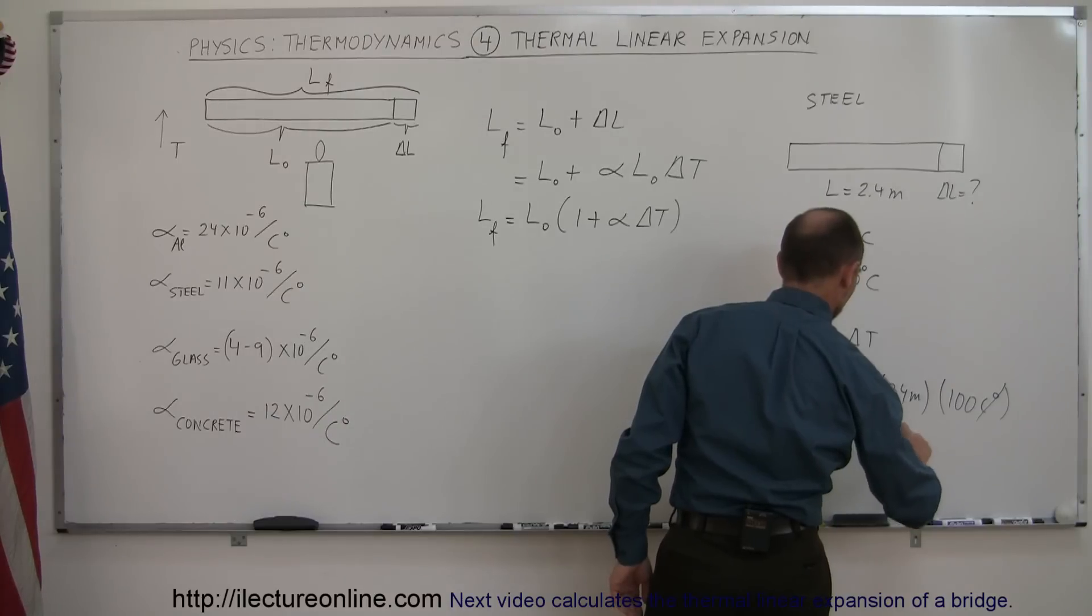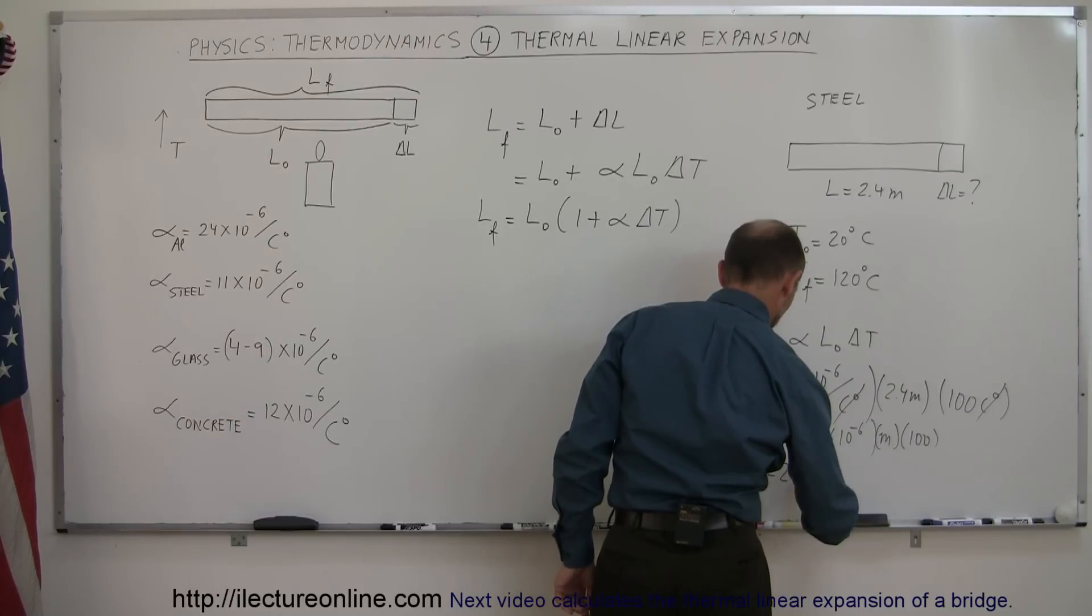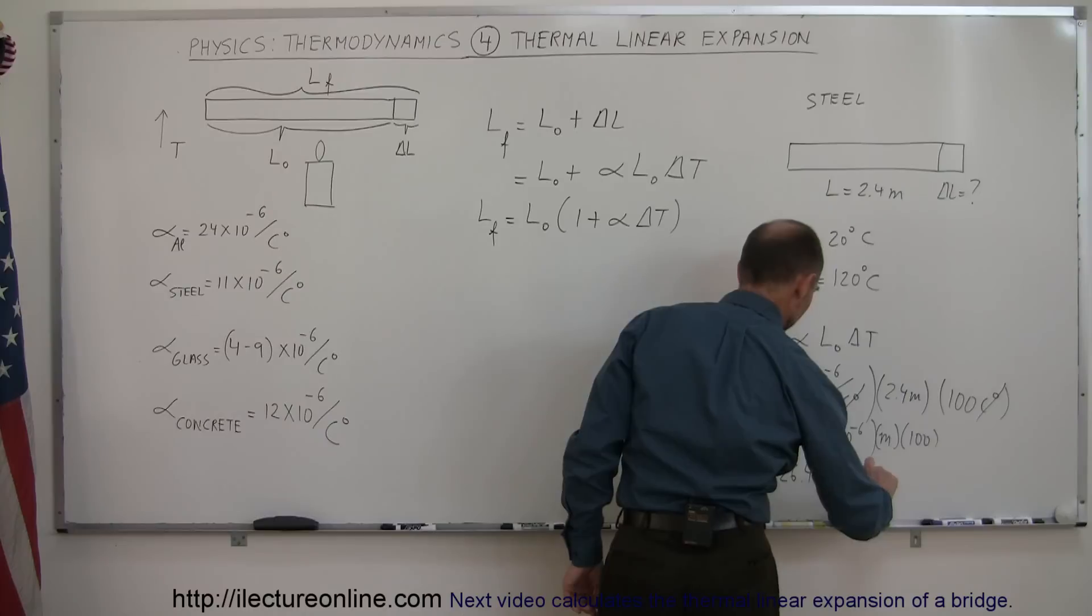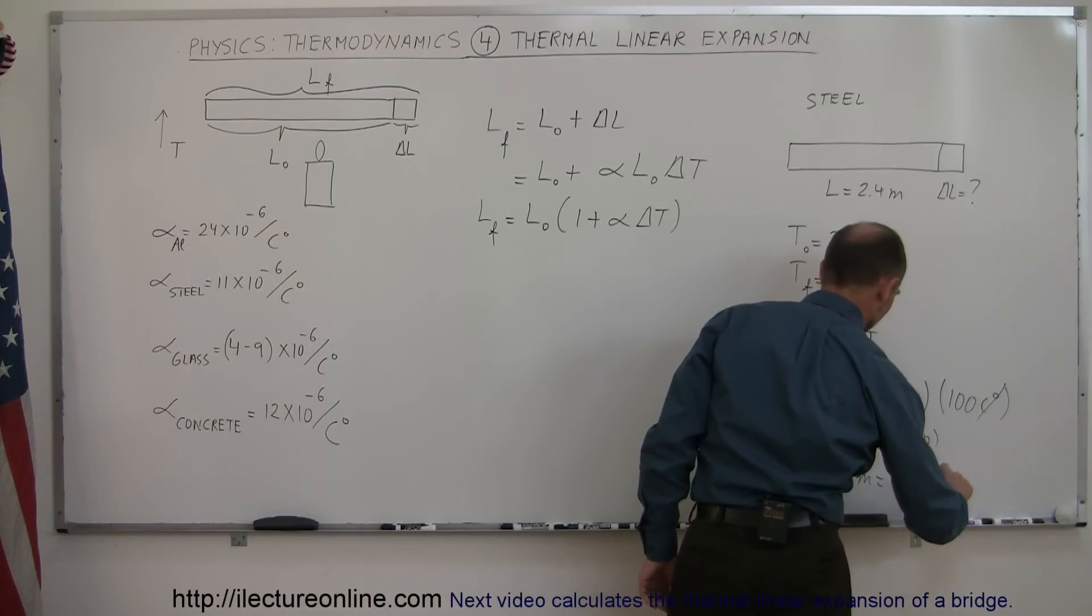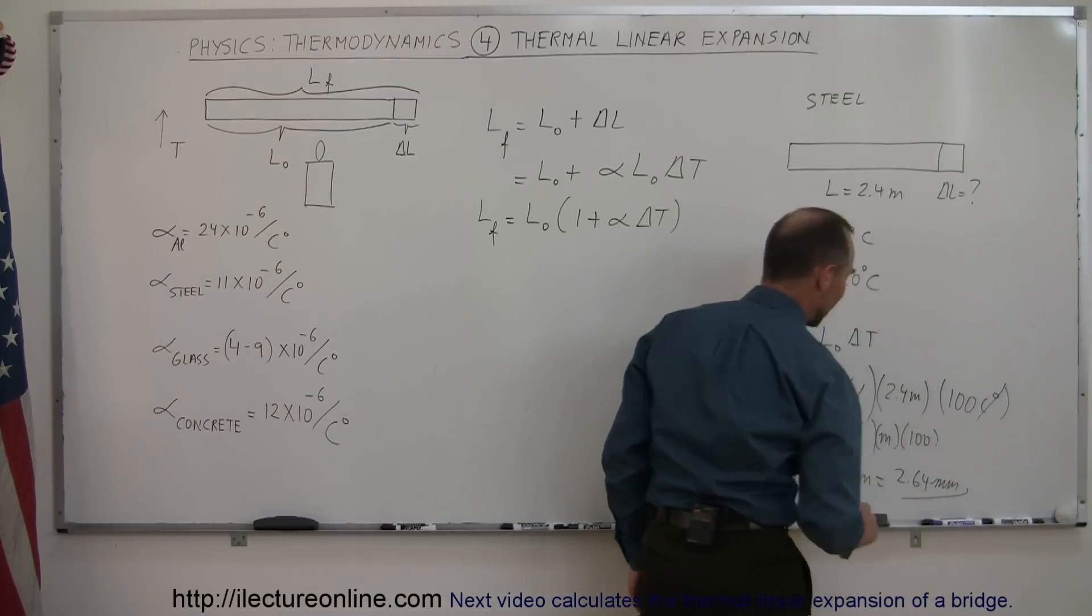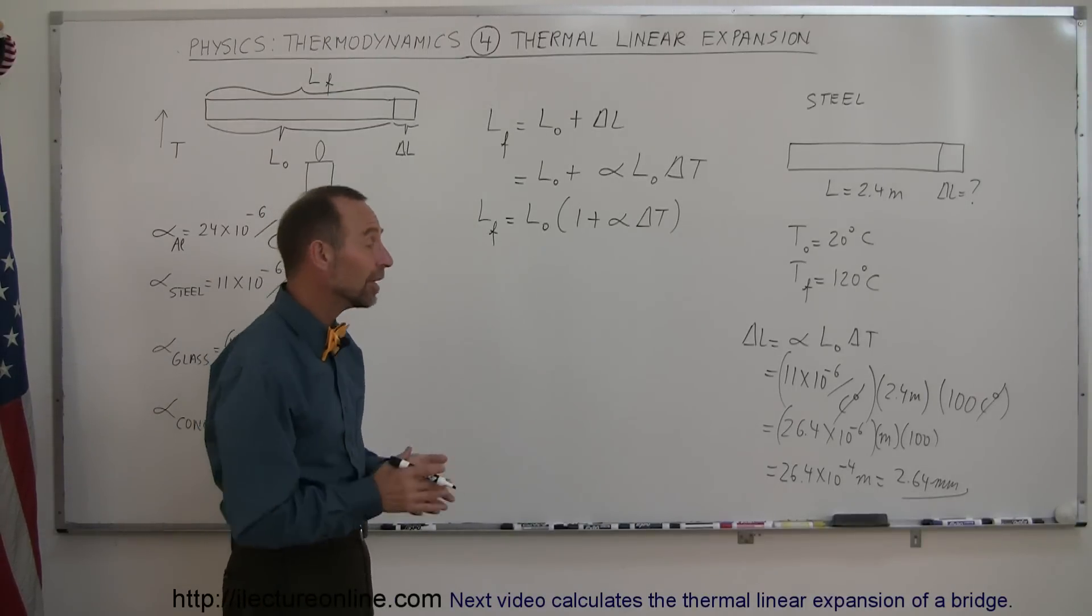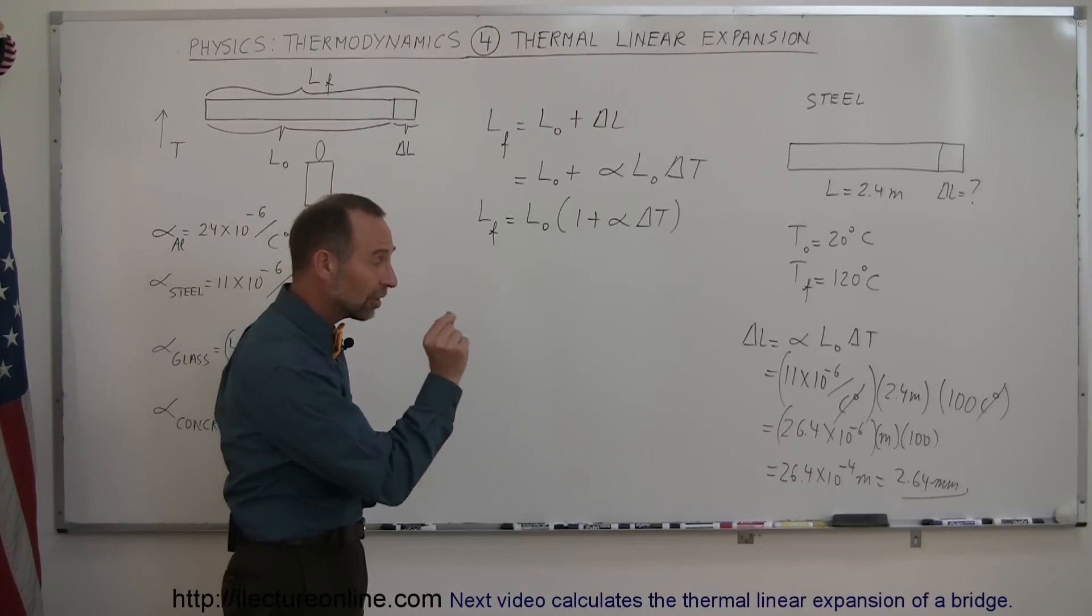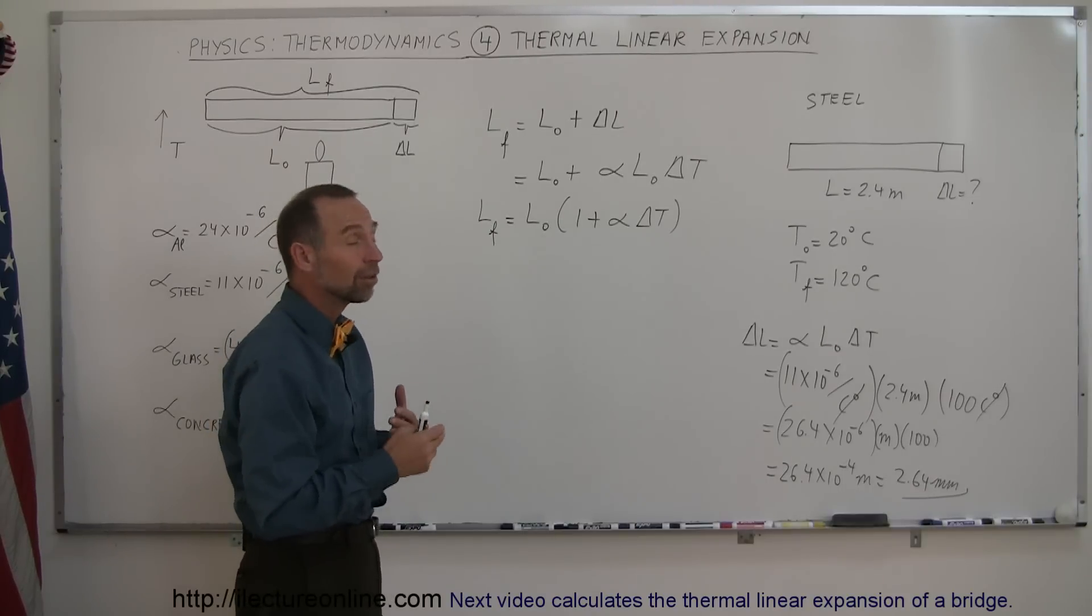And times 100, of course, 100 will take off a couple notches of the exponent there, so it would be 26.4 times 10 to the minus 4 meters, or when you move the decimal place over, that would be 2.64 millimeters. So if you increase the temperature of a steel bar that's 2.4 meters long, a little bit more than 8 feet, if you raise it by 100 degrees Celsius, it will actually increase in length by about 2.64 millimeters, which is about a tenth of an inch. You may say, well, that's not a whole lot, which is true.